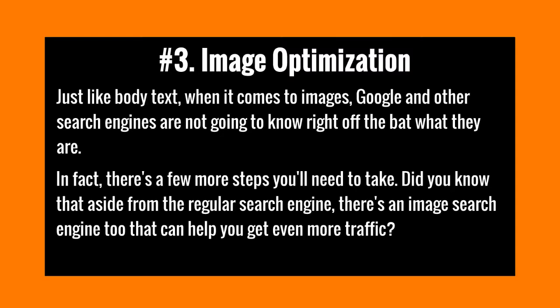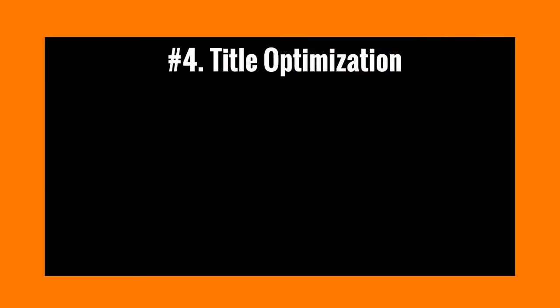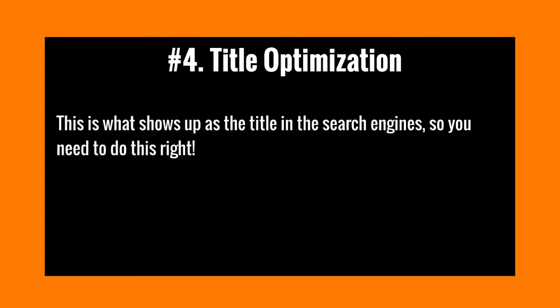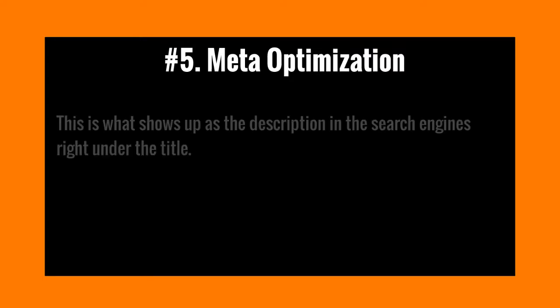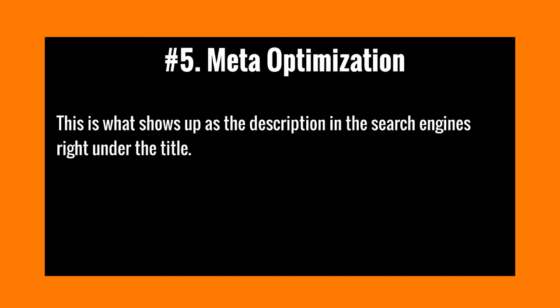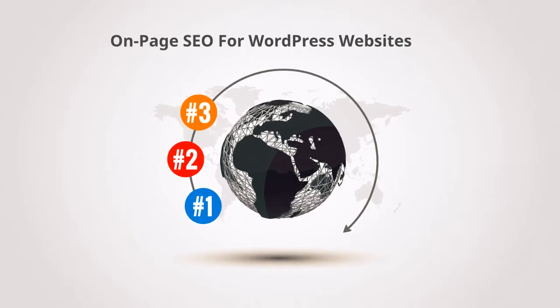Beyond that, there are a few more steps you'll need to take. Plus, you can actually get a lot of traffic from the image search engine itself. Factor number four is title optimization — how to make your titles search engine friendly — because your titles do show up in the search engine results. You need to do this right, otherwise you'll attract the wrong person. Number five, meta optimization — you've got the description and other metadata that will show up underneath the title in the search engine results, so you want to make sure you attract the right person.